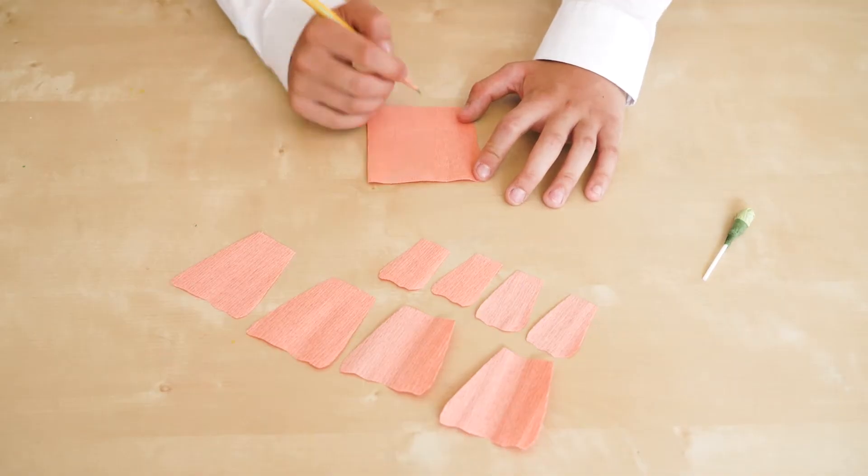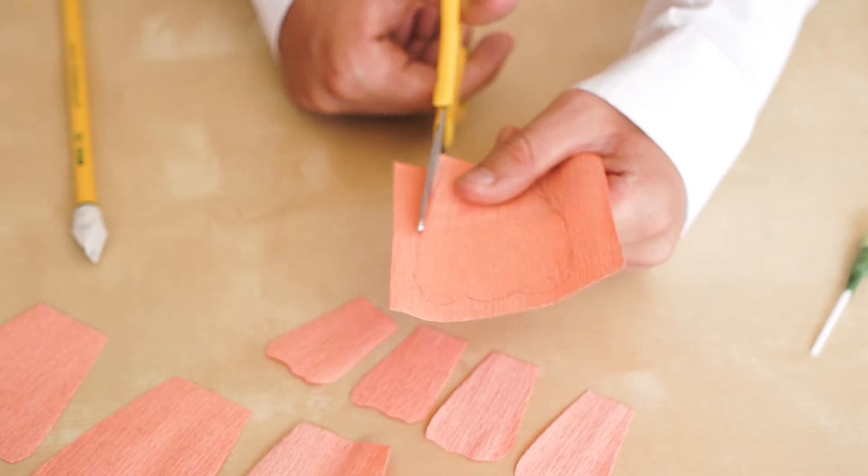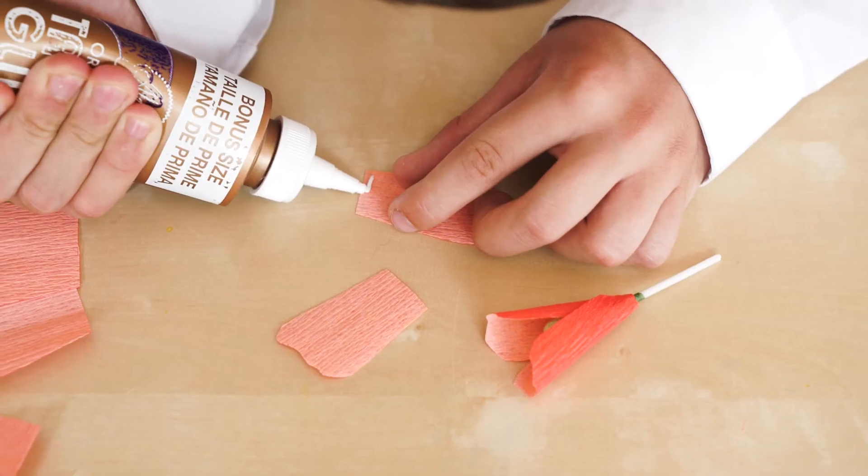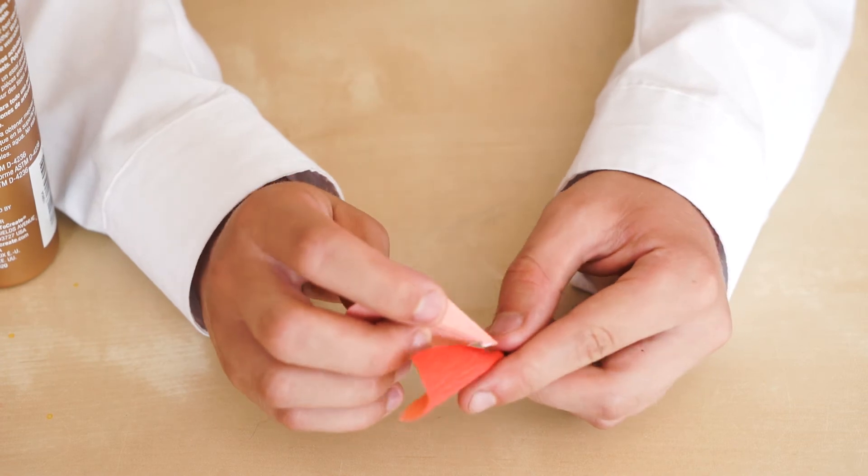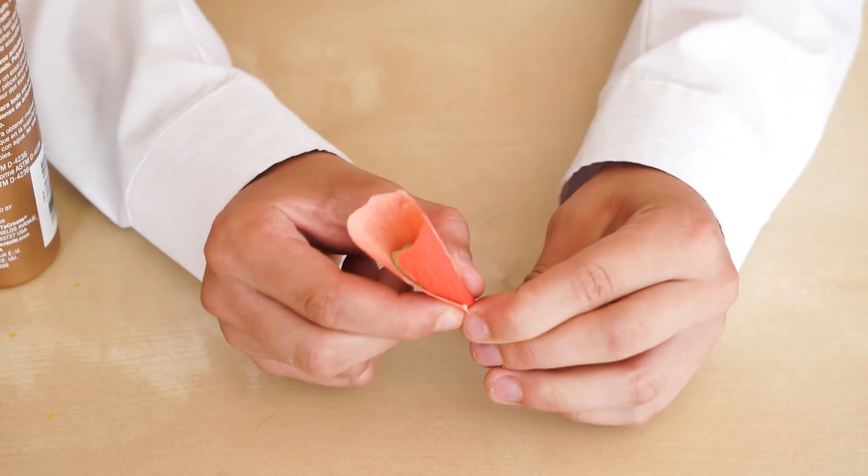Let's make our petals. Four big, four small. Now cut out your design. Put a small line of glue at the bottom of one of your petals. Wrap it around and then pinch until it sticks.